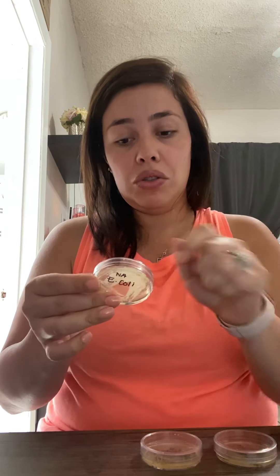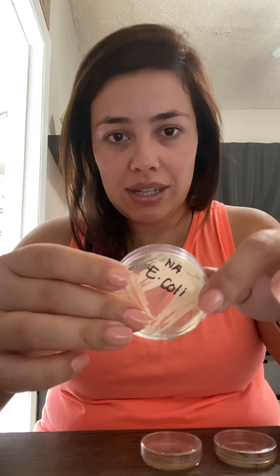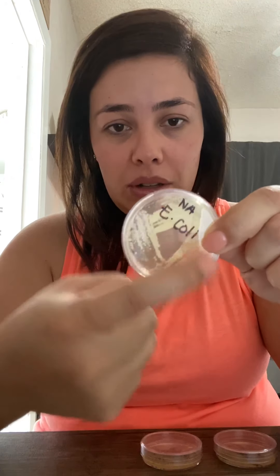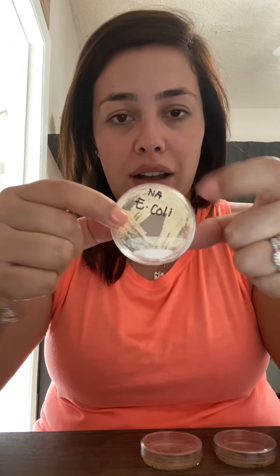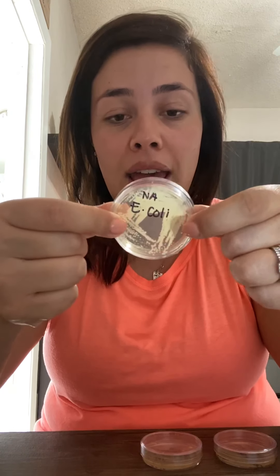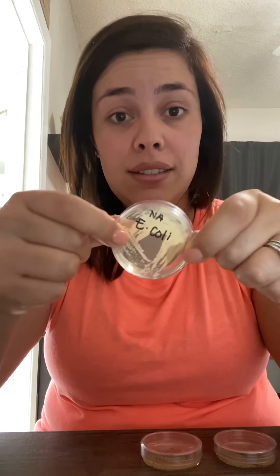As you can kind of see down here, we have three different cultures that we smeared. Using inoculation loops, we went ahead and created smears of the cultures. You can see how we utilized the four quadrants of the petri dishes, and these actually had to incubate for a couple of days.